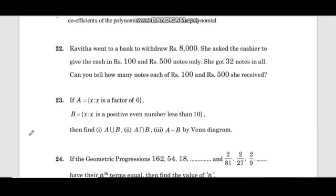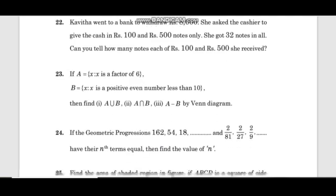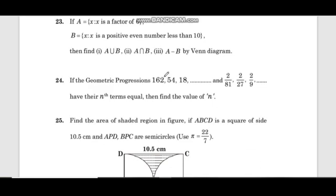Kavitha went to bank to withdraw 8,000 rupees. She asked the cashier to give the cash in 100 rupees and 500 rupees notes only. She got 32 notes in all. Can you tell how many notes of 100 rupees and 500 rupees she received?